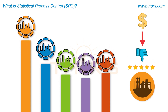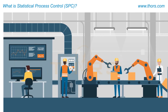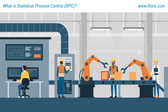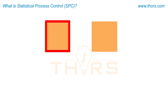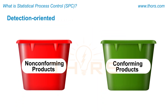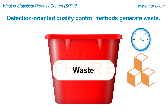Non-conforming products can lead to financial loss and may even affect the reputation of the organization. Historical methods of quality control used to focus on inspecting the process output to detect non-conformities. The detected non-conformities were then isolated from conforming products. Detection-oriented quality control methods generate waste by requiring an organization to invest in time and materials to produce the product first and then implement the control methods.